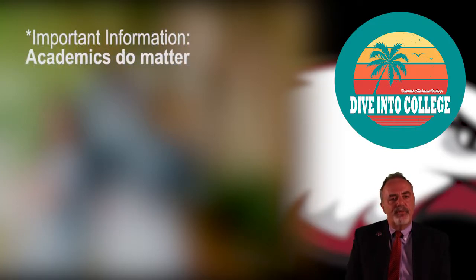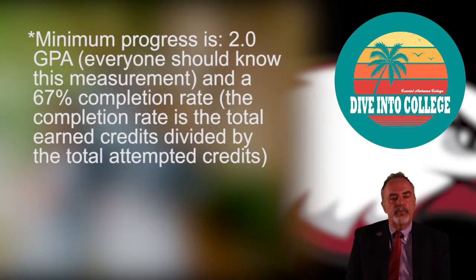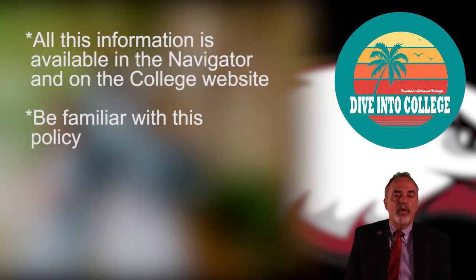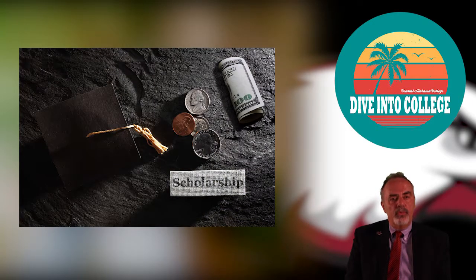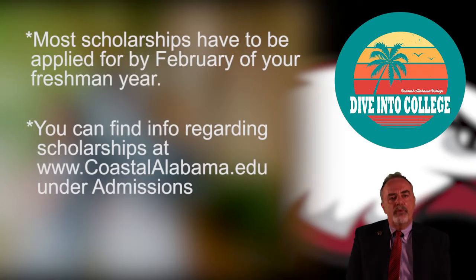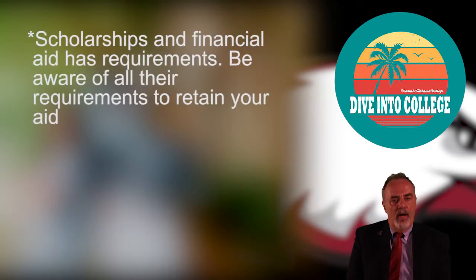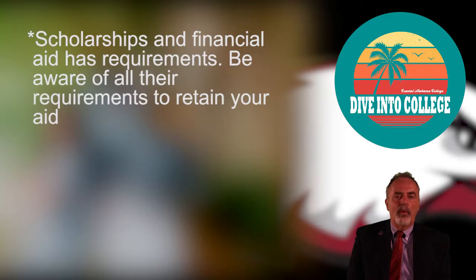Students must maintain satisfactory academic progress — a 2.0 GPA, 67% completion rate to maintain eligibility. Coastal Alabama also has numerous scholarships located on our scholarship page on the website. Most scholarships require you to apply by February of your freshman year. We also have one for returning students that requires 24 credits and a 2.5 GPA to qualify. So after this term and summer term, you might be able to qualify if you apply.